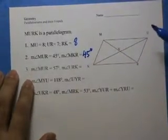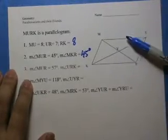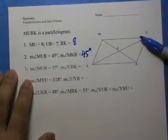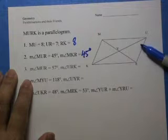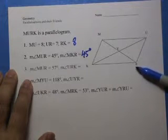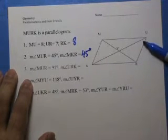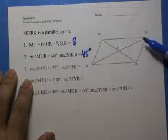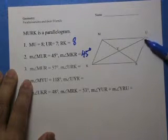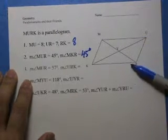Question 3, angle MUR is 57. Angle URK is this one here. That's the one being asked for. MUR, up here again. MURK, this one here.